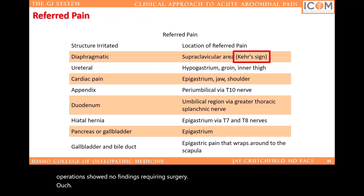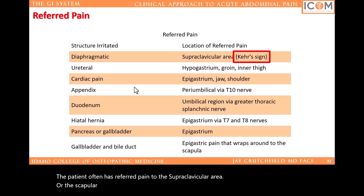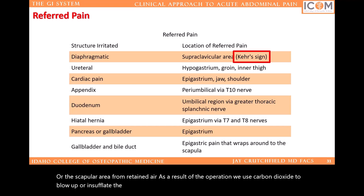Kerr's sign is commonly encountered after laparoscopic surgery. The patient often has referred pain to the supraclavicular area and the scapular area from retained air as a result of the operation. We use carbon dioxide to blow up or insufflate the abdomen to allow the laparoscopic procedure to proceed.